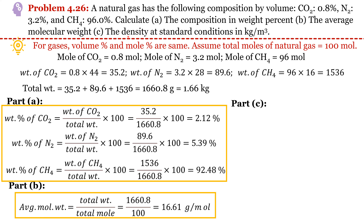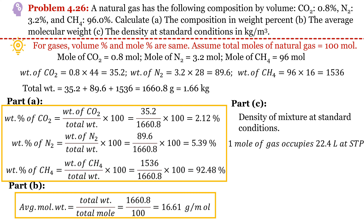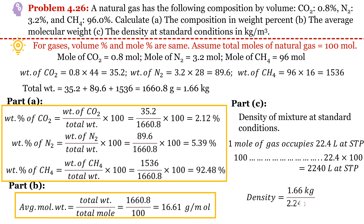In Part (c), we estimate the density at standard conditions. Density equals mass per unit volume. Mass has already been estimated. At STP, one mole of gas occupies 22.4 L. For 100 moles, volume = 22.4 × 100 L, which is then converted to m³. Dividing total weight by volume gives a density of 0.74 kg/m³.